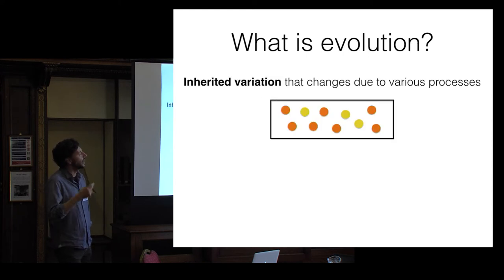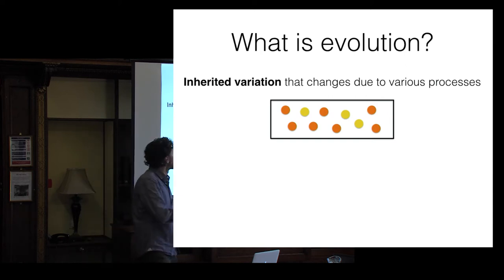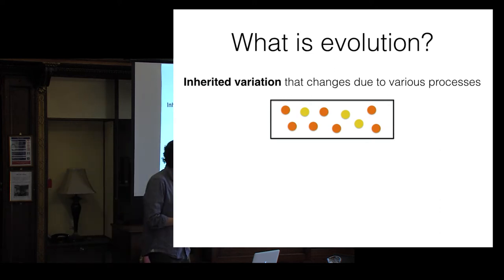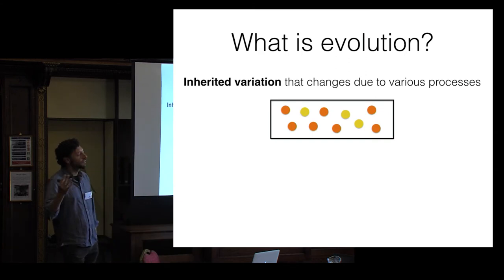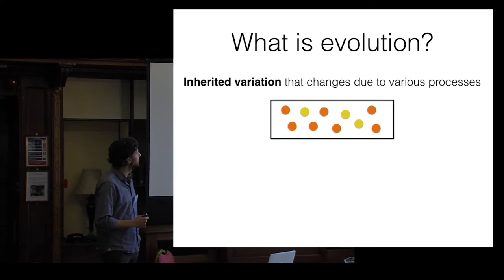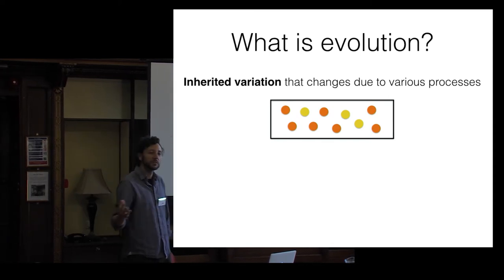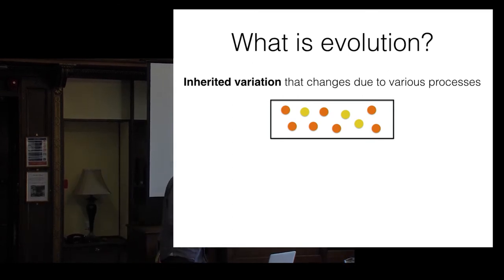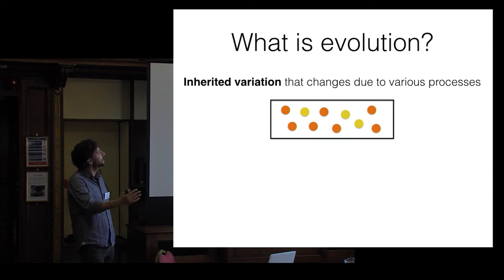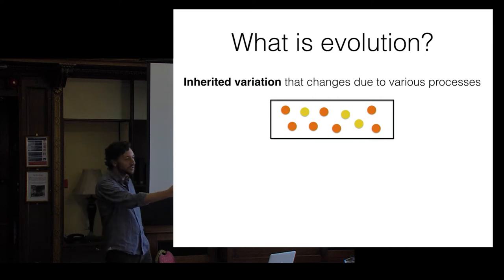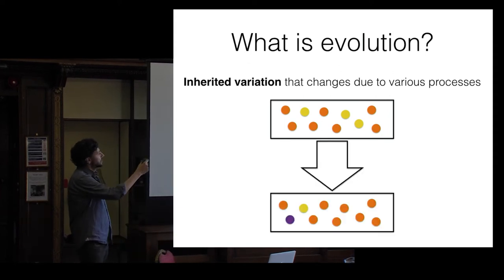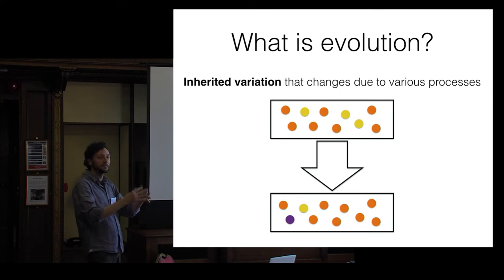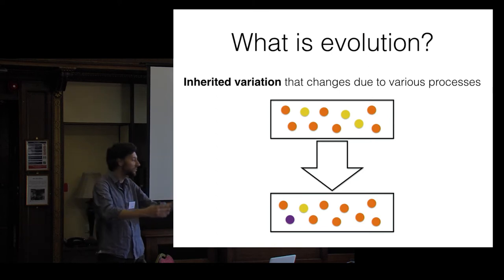The next key question is: what is evolution? There are many different ways of defining it. The textbook biology definition is changes in gene frequency, which immediately prevents any analogy to cultural change. But we're interested in a theory of evolution that you can apply to culture, to socially inherited things. The way Charles Darwin laid out in the Origin of Species — since he didn't know about genetics — is inherited variation that changes due to various processes over successive generations.